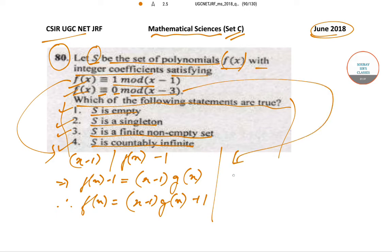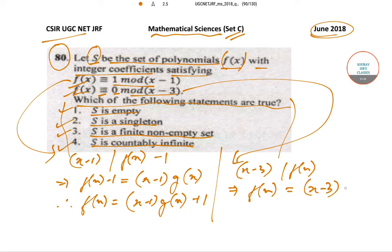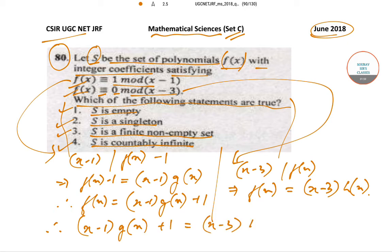The other part is that f(x) is congruent to 0 mod of (x minus 3), so that implies that (x minus 3) divides f(x). Therefore we can write that f(x) is equal to (x minus 3) into h(x). Now if we equate these two terms, therefore (x minus 1) into g(x) plus 1 is equal to (x minus 3) into h(x).